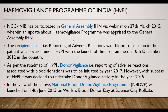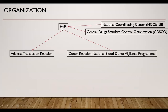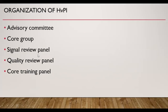The organization structure of the Hemovigilance Program of India is supported by the National Coordinating Center, or NIB, and the Central Drug Standard Control Organization. It has two parts: adverse reactions due to transfusion, and donor adverse reactions known as the National Blood Donor Vigilance Program. The internal structure of HVPI includes an advisory committee, a core group, a signal review panel, a quality review panel, and a core training panel.